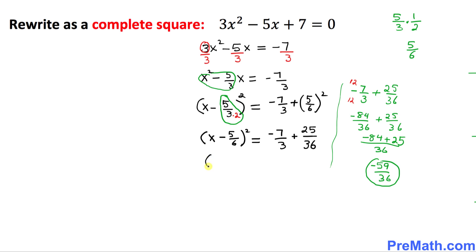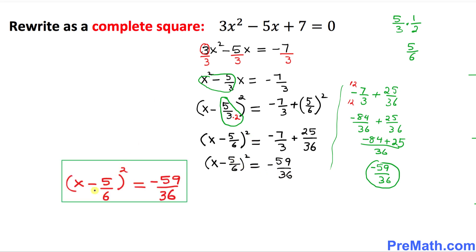So on the left-hand side we have x minus 5 over 6, squared. On the right-hand side I simplified these two fractions by making sure we have a common denominator of 36, and we got negative 59 over 36. That completes the square — our answer turns out to be x minus 5 over 6, squared, equal to negative 59 over 36.